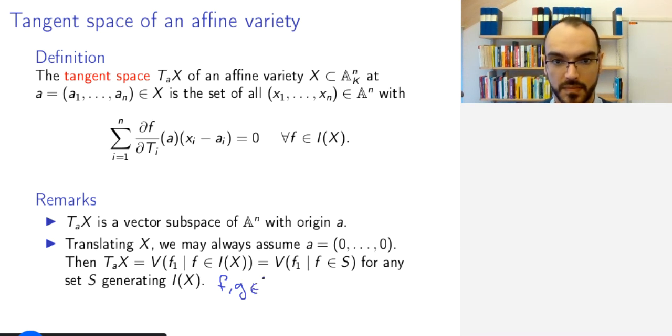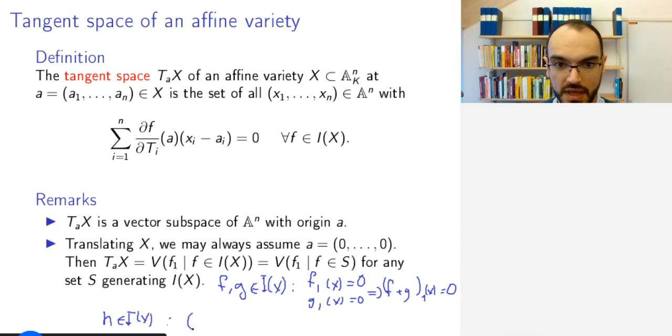To prove the inverse inclusion, you have to see that if you have functions f and g in I(X) such that f_1 of x is 0 and g_1 of x is 0, then (f plus g)_1 of x is 0. But this is clear because the one part of f plus g is the sum of the one part of f and the one part of g. And what's more, if you take any arbitrary h in I(X) and look at h times f_1 at x, well, when you take a product of two polynomials, the linear part will be the constant part of h times the linear part of f plus the constant part of f times the linear part of h.